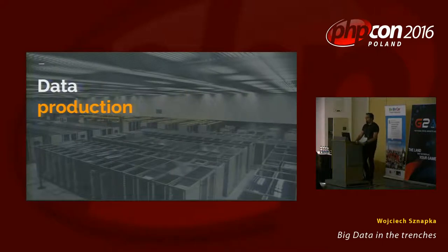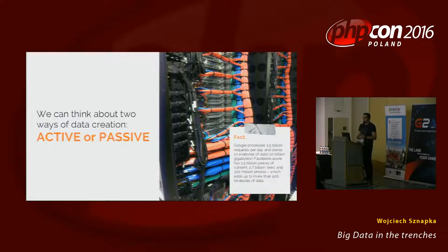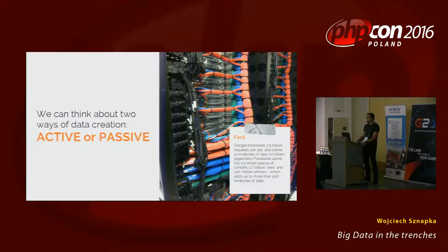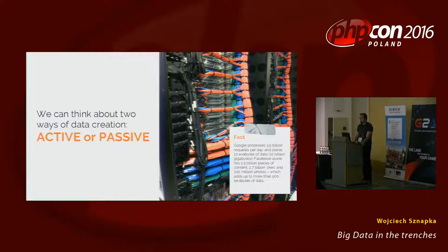We'll start with data production — big data needs to be born somewhere. I refer to data production in two categories: active and passive. Google processes more than 3 billion requests per day, that's like 10 exabytes, which is crazy. And Facebook alone produces two and a half billion pieces of content, 2.7 billion likes, and 300 million photos. Those are insane numbers that you need to first capture and then process.